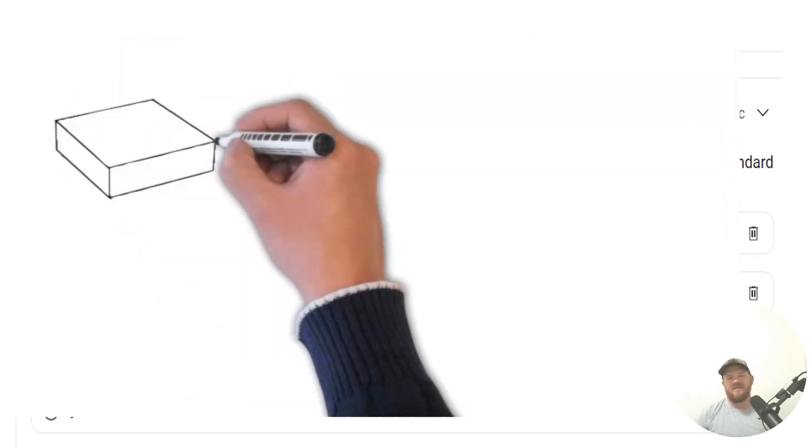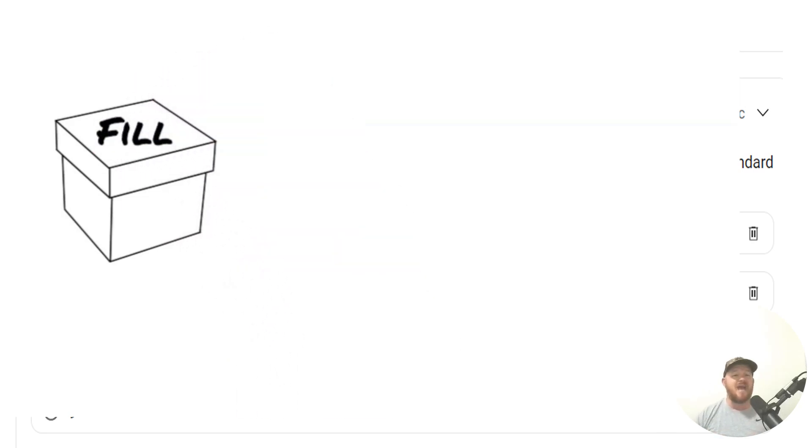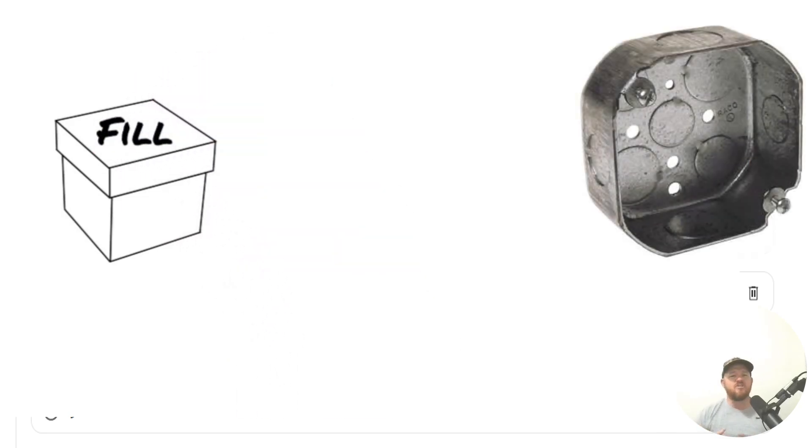But let's go ahead and look at what we're talking about today. Of course we're looking at box fill and this is the specific box that we're talking about in this question. This is an octagon box, an inch and a half deep octagon box that you'll use out in the field usually for lighting outlets.